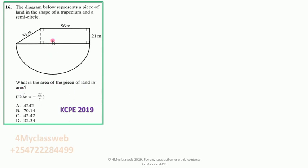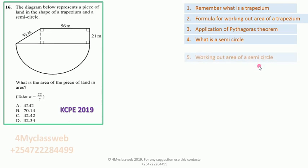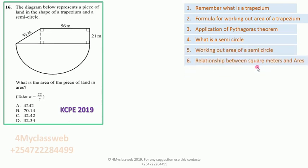This shape is a combination of two shapes: the upper shape which is a trapezium, and the shape below which is a semicircle. To get this area, the candidate was required to remember a few concepts — for example, what is a trapezium, the formula for working out the area of a trapezium, application of Pythagoras theorem, what is a semicircle, working out the area of a semicircle, and the relationship between square meters and ares, plus many more other concepts that will assist the candidate to get this area.